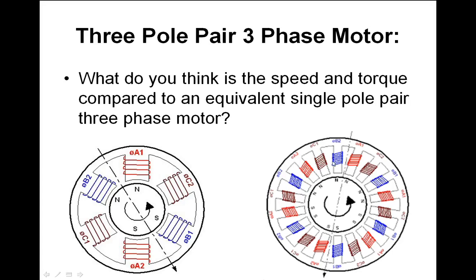You lose speed but gain torque — it's like an electronic gearbox. Torque doubles with two pole pairs. With three pole pairs per phase: red, brown, blue repeated three times around the stator. The speed drops to 1000 RPM and torque triples — Ryan got it right: triple torque, one-third speed at 1000 RPM. This pattern continues with four, six pole pairs and so on — speed decreases and torque increases proportionally.